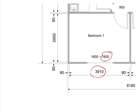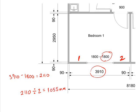What you're going to do is take 1800 away from 3910. This gives you the actual amount of wall remaining, which is 2110. Since the window is placed centrally along the wall, there are two wall sections on either side, so we divide 2110 by two. That gives us 1055, so either side of the window is going to be 1055 millimeters.